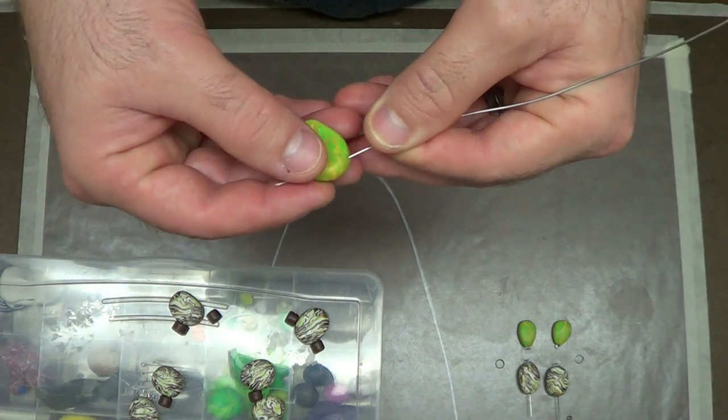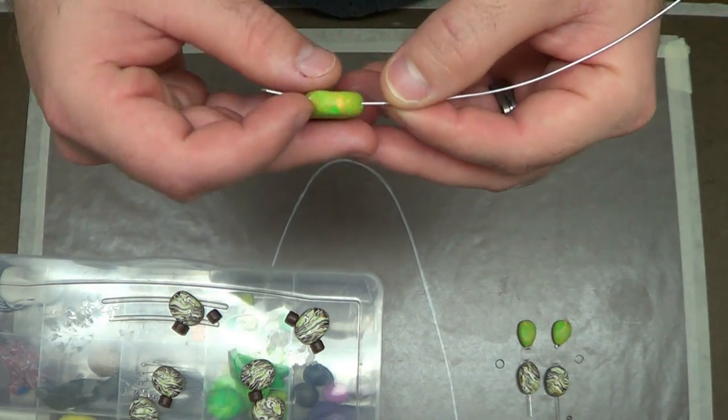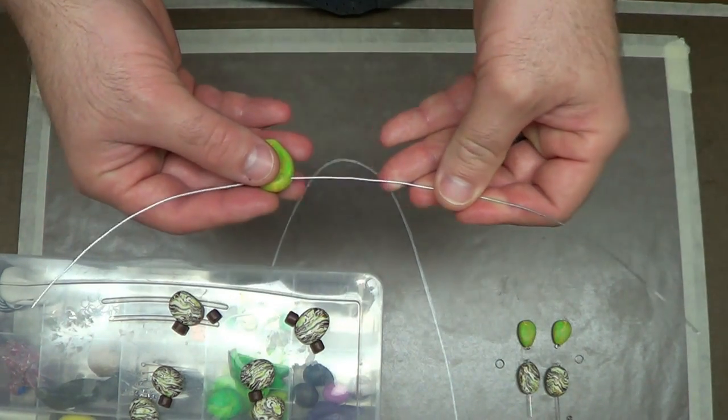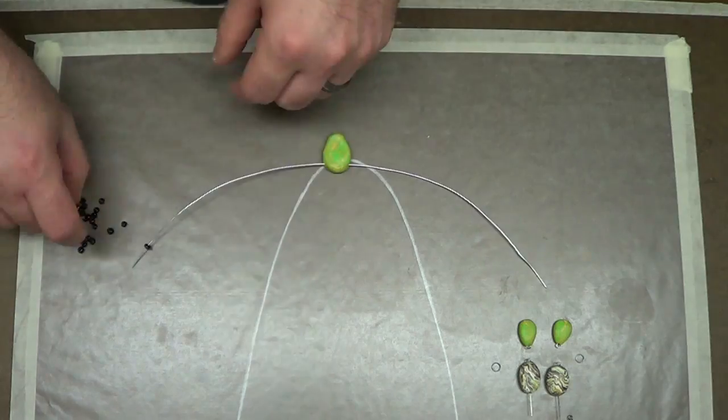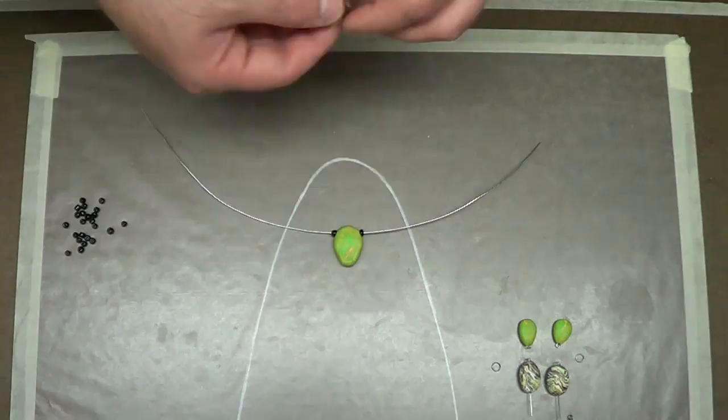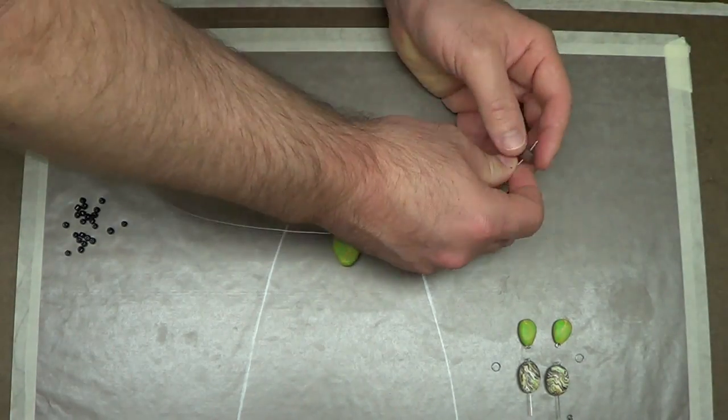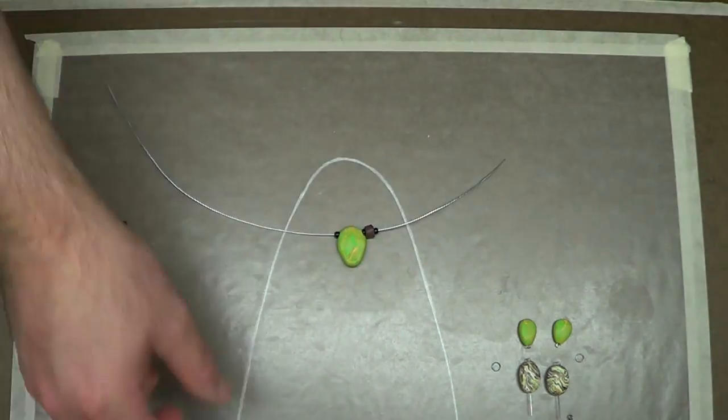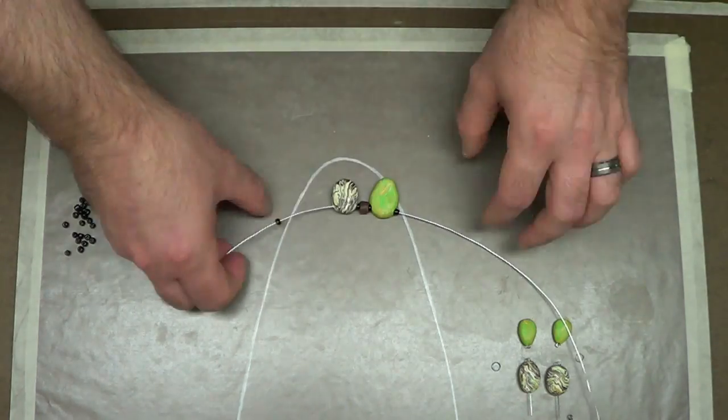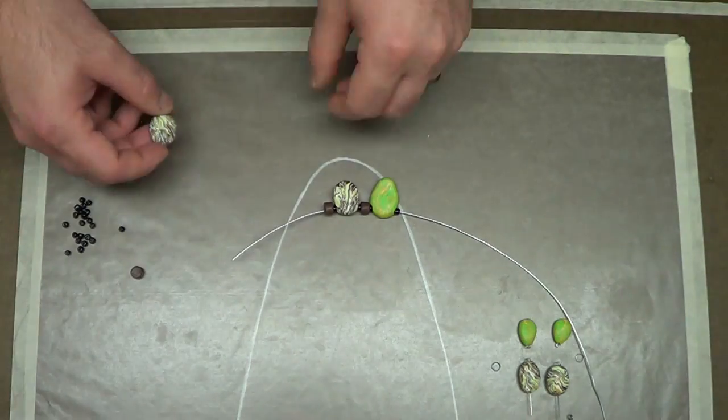So once I put all these on here, they're basically ready to be baked. And I just baked them on a sheet pan with three sheets of wax paper in between the steel and the clay to keep the excessive heat off the pan from reaching the beads.